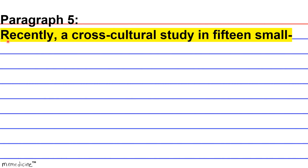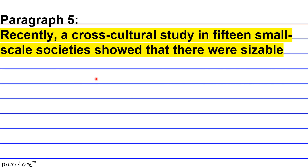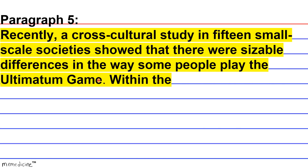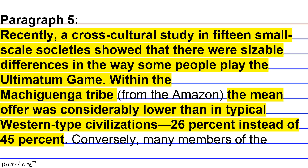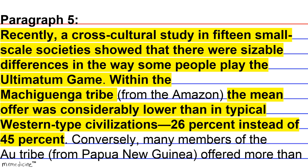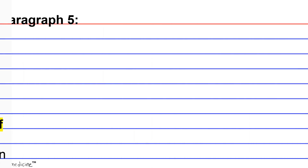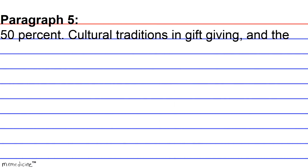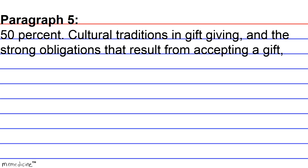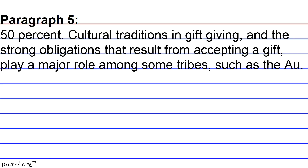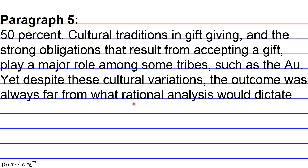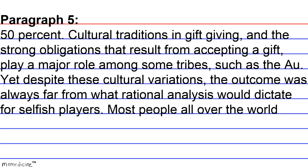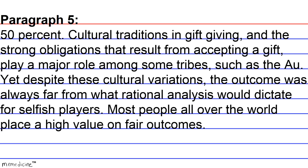Paragraph 5. Recently, a cross-cultural study in 15 small-scale societies showed sizable differences in the way some people play the ultimatum game. Within the Makiguengo tribe from the Amazon, the mean offer was considerably lower than in typical Western-type civilization — 26% instead of 45%. Conversely, many members of the Awe tribe from Papua New Guinea offered more than 50%. Cultural traditions of gift-giving and strong obligations resulting from accepting a gift play a major role among some tribes, such as the Awe. Yet despite these cultural variations, the outcome was always far from what rational analysis would dictate for selfish players. Most people all over the world place a high value on fair outcomes.